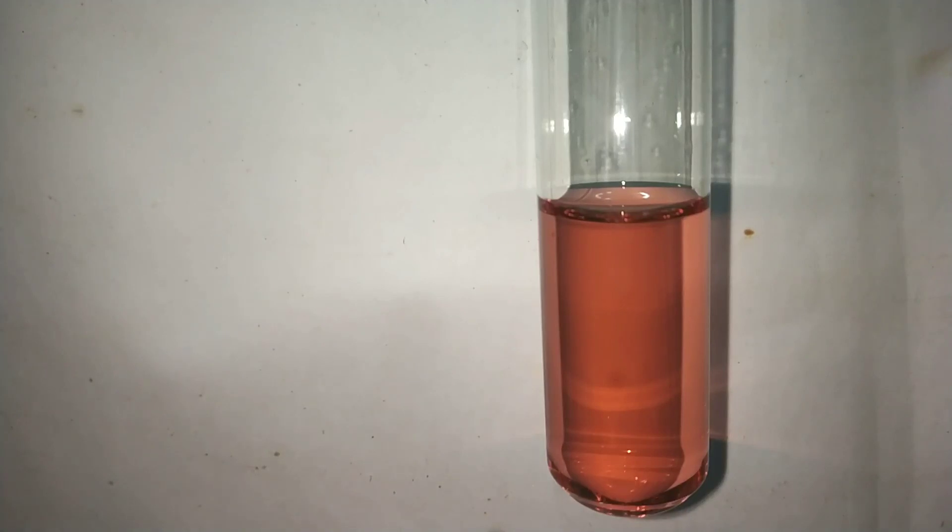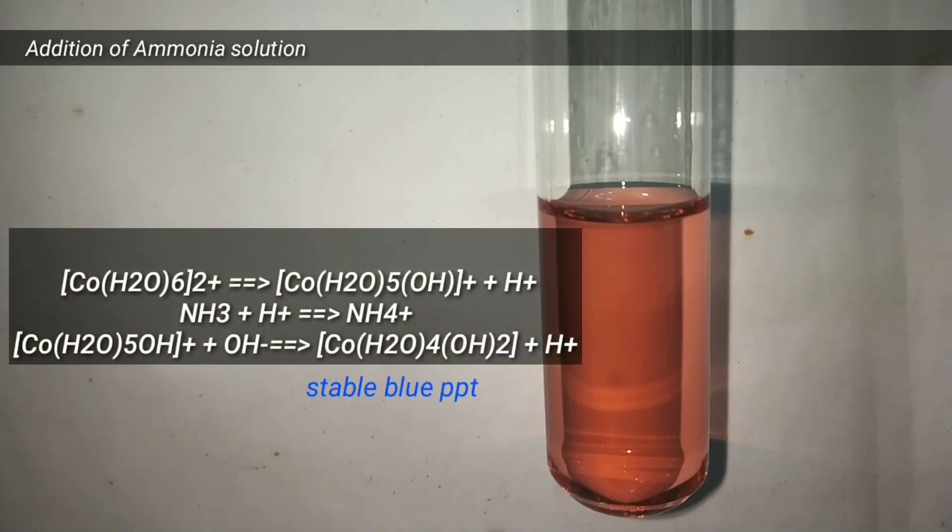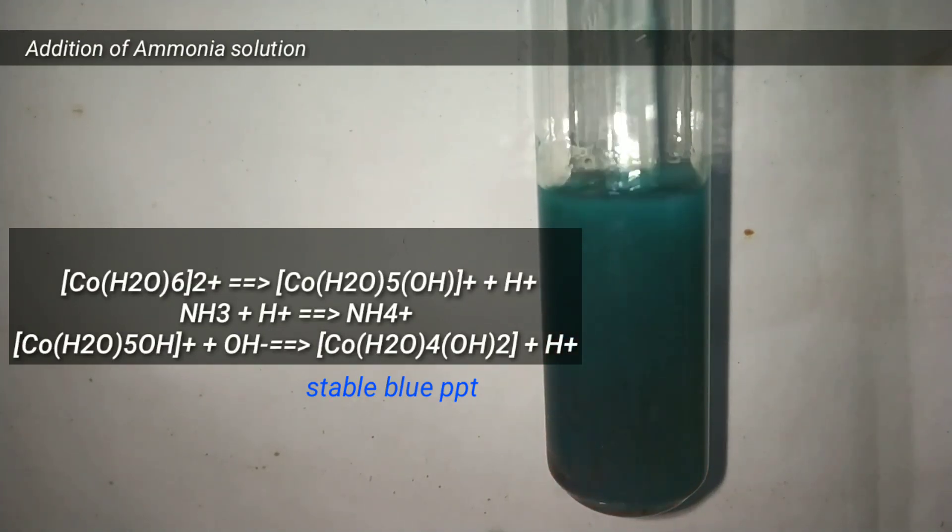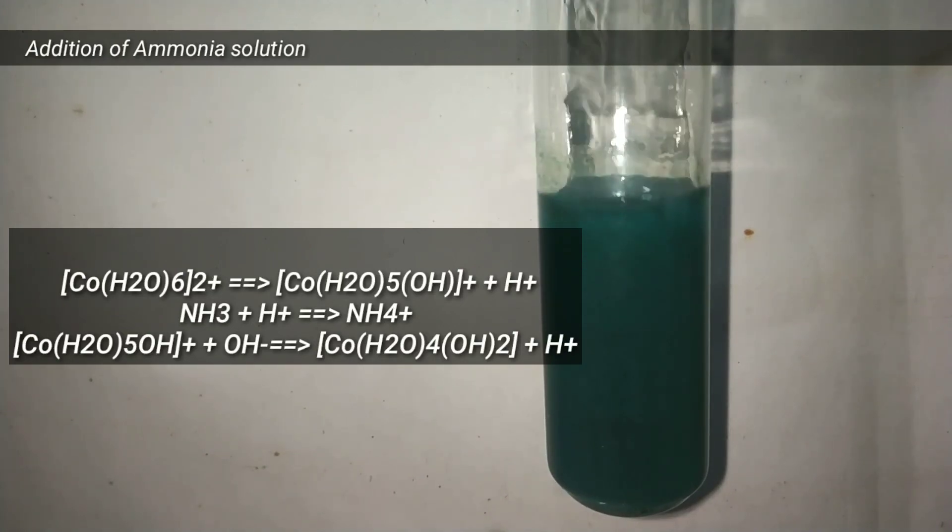In this video, we will be adding a little ammonium hydroxide to cobalt 2 chloride. Initially, one of the water molecules is deprotonated to form the intermediate product with single OH and an H plus is released. Ammonia uses this H plus to form the ammonium ion.